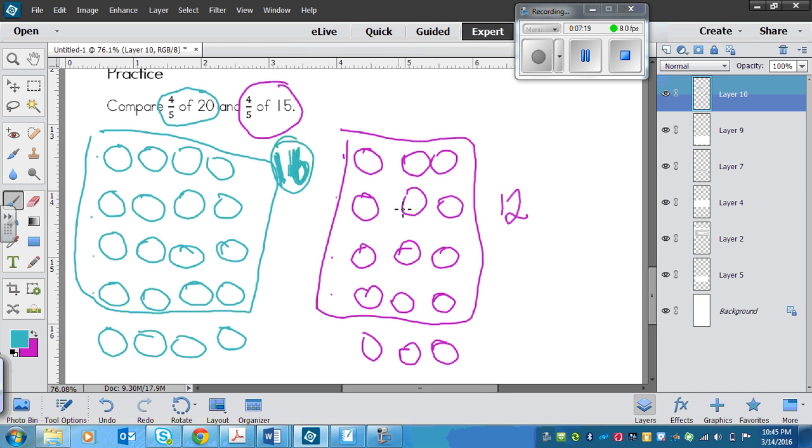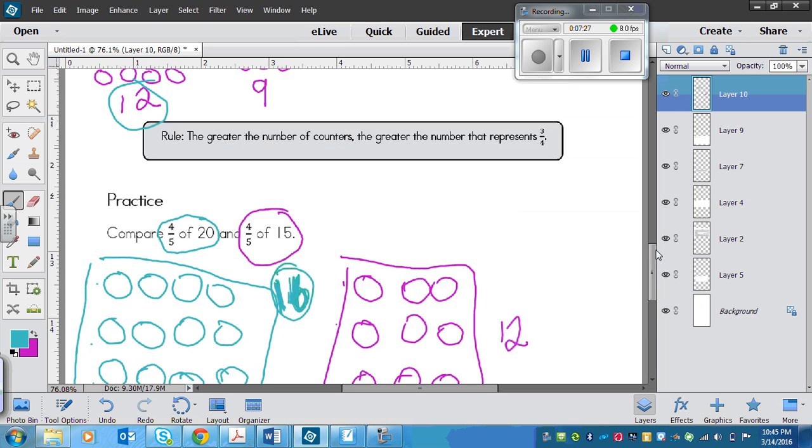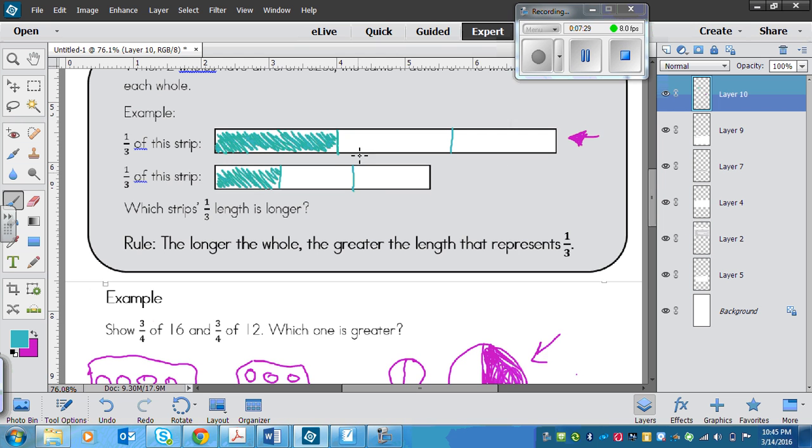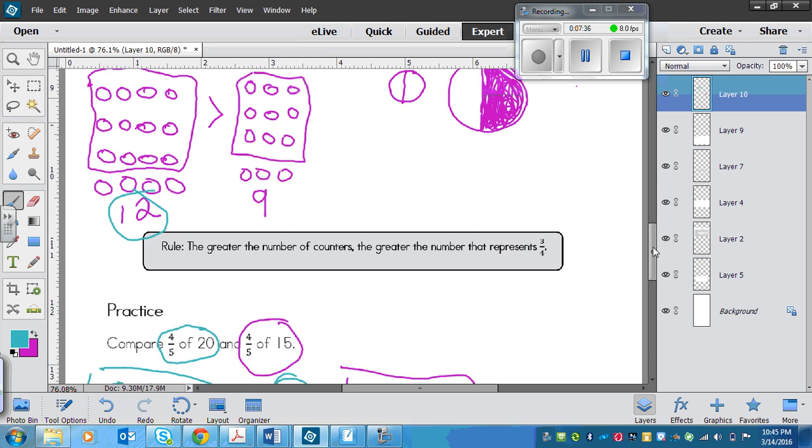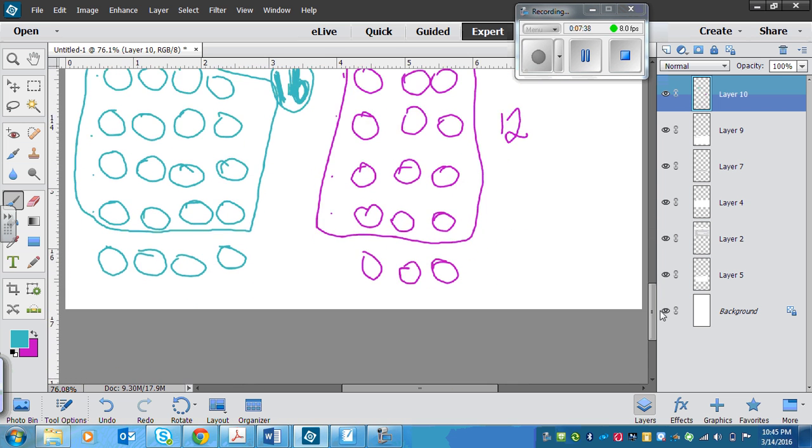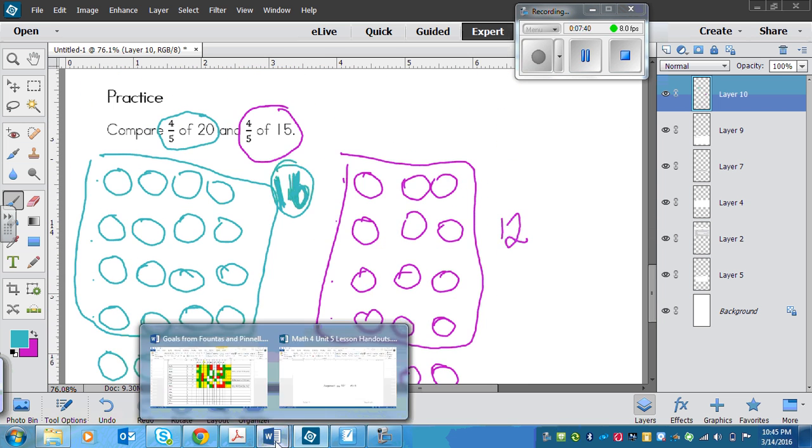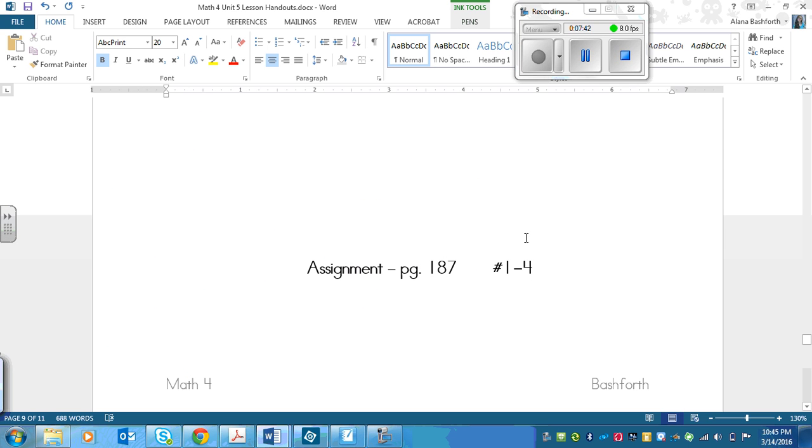The first two questions of the assignment is going to ask you to show strips. So you're going to have to measure and cut those out. But those will be similar to this and you'll fold them. Okay. And you'll just glue those into your notebook. And then the other ones are sort of counter ones. So the assignment is on page 187 and it's numbers 1 to 4. So I'll show you here.